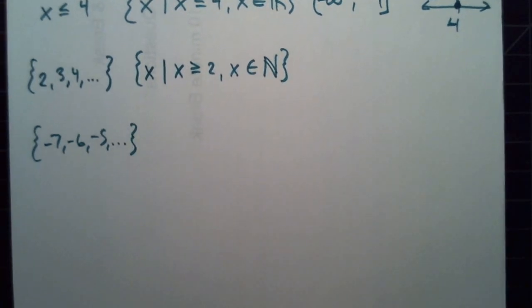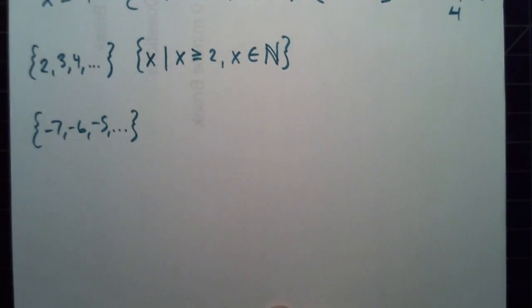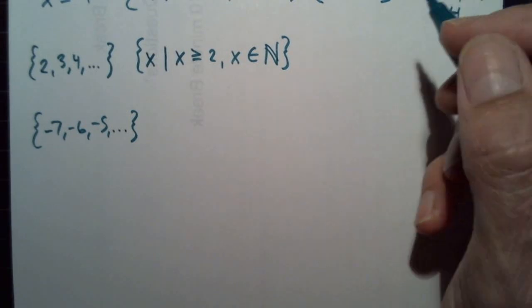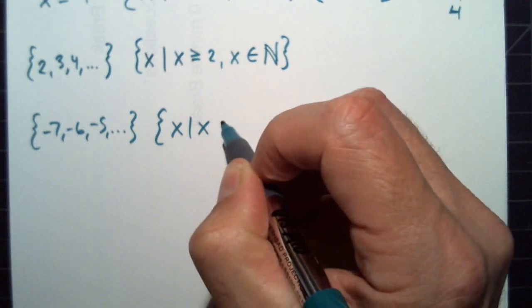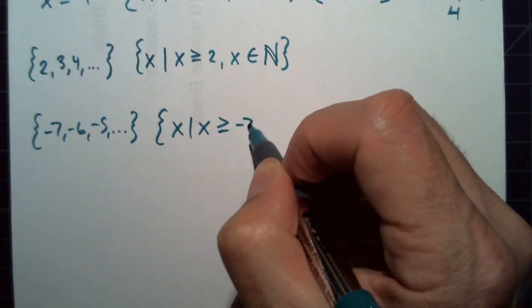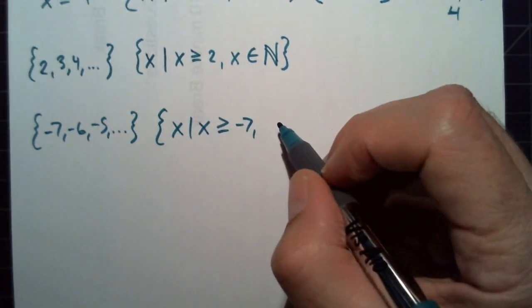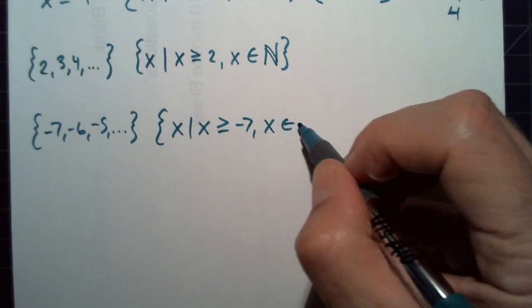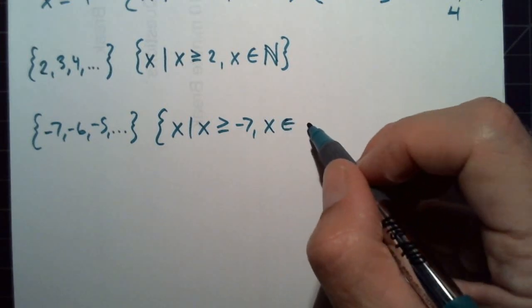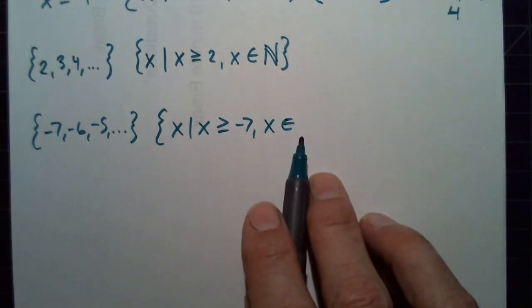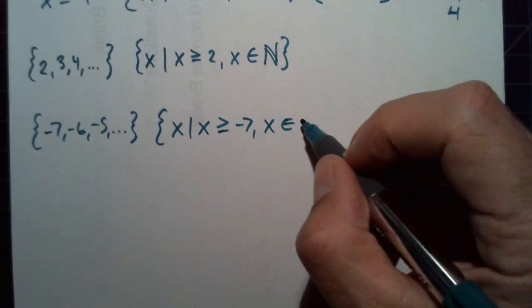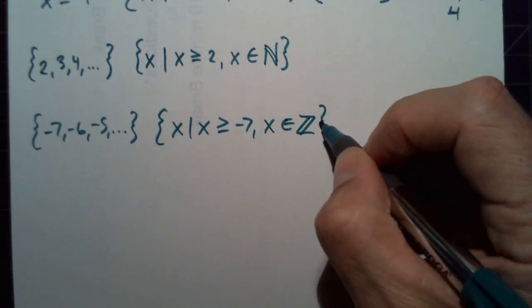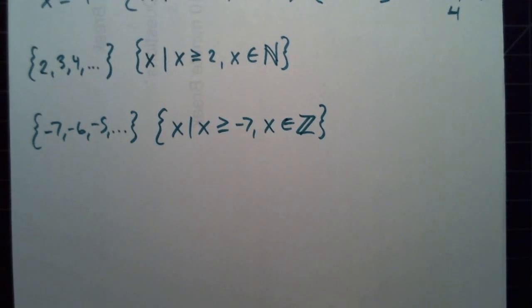Try writing that in set builder notation — pause the video. x such that x is greater than or equal to negative 7, and x is in integers. If we said natural numbers, they start at 1, but we need negative numbers, so we have to say integers. And we can't write it in interval notation.